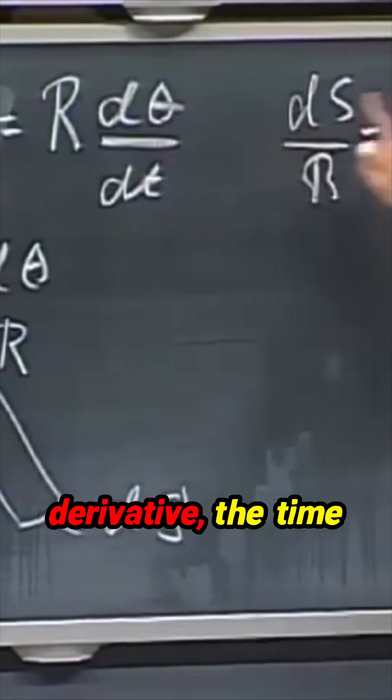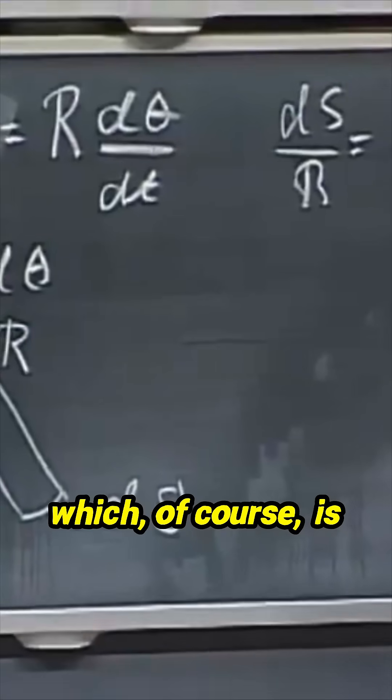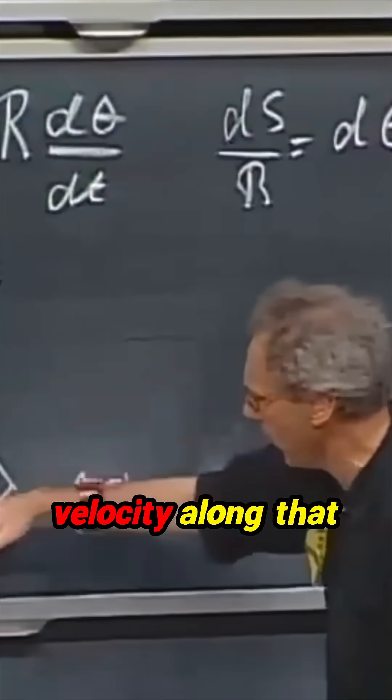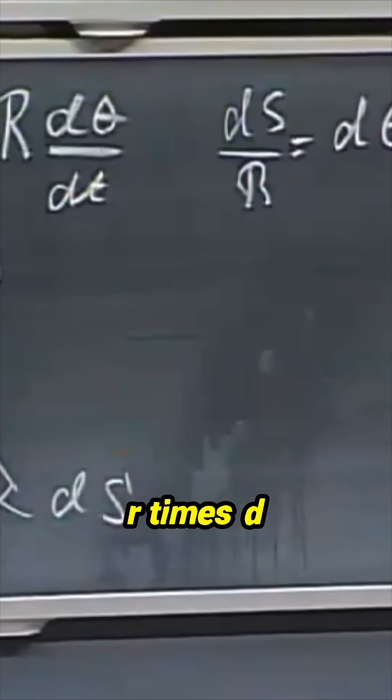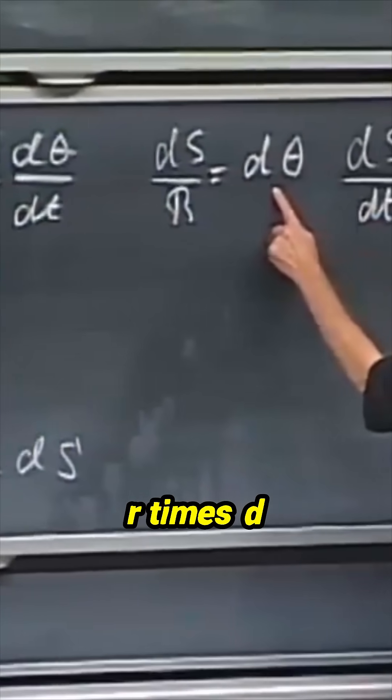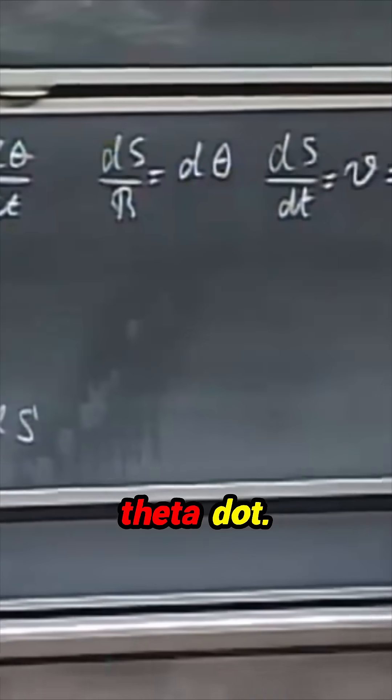So I take the derivative, the time derivative, left and right. So I get ds dt, which of course is the tangential velocity along that arc, equals r times d theta dt, for which you can write r theta dot.